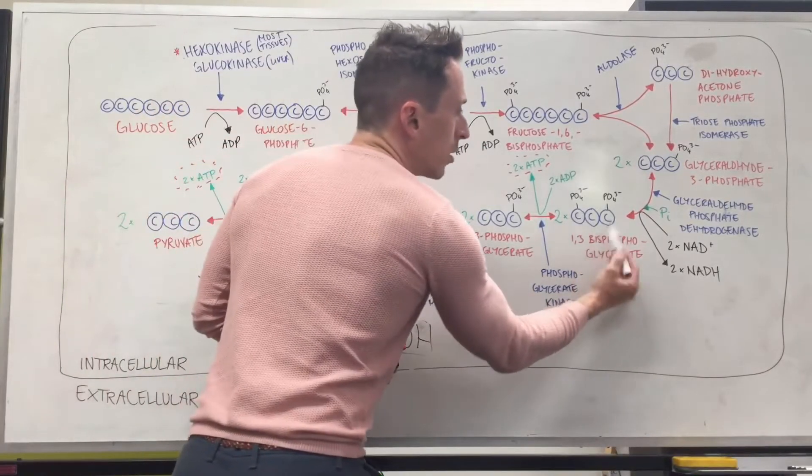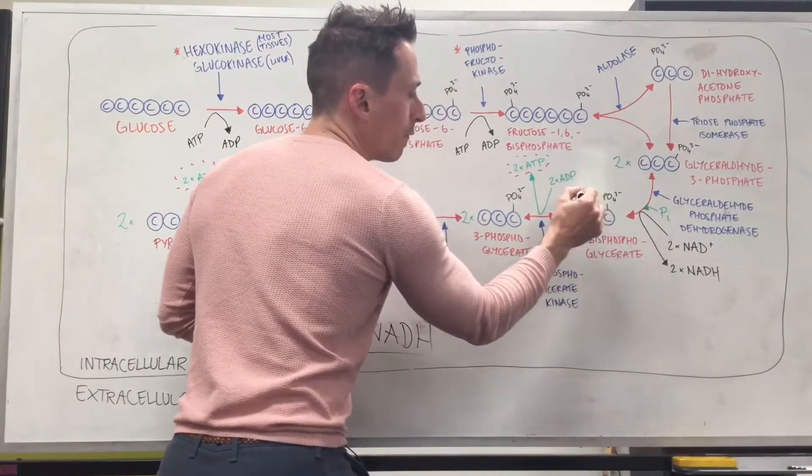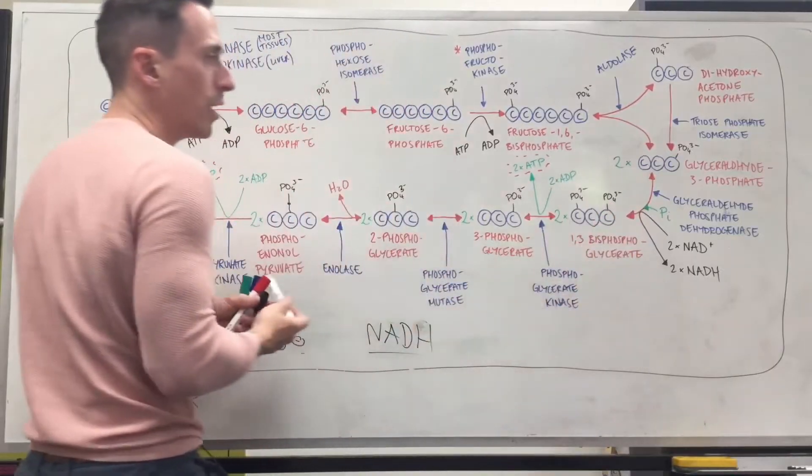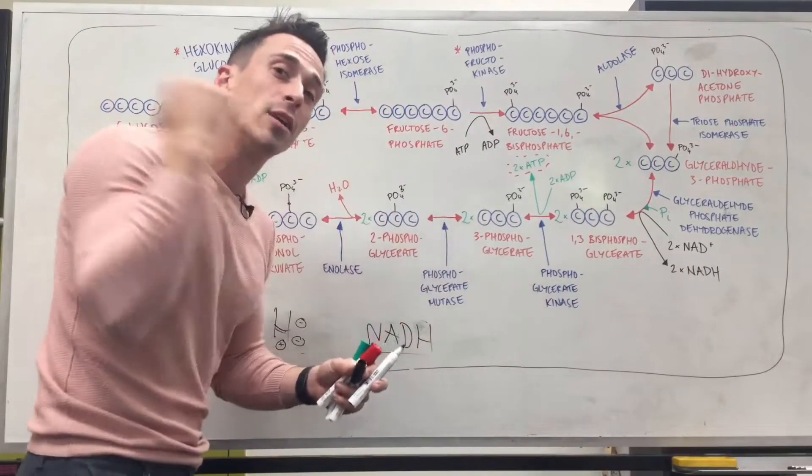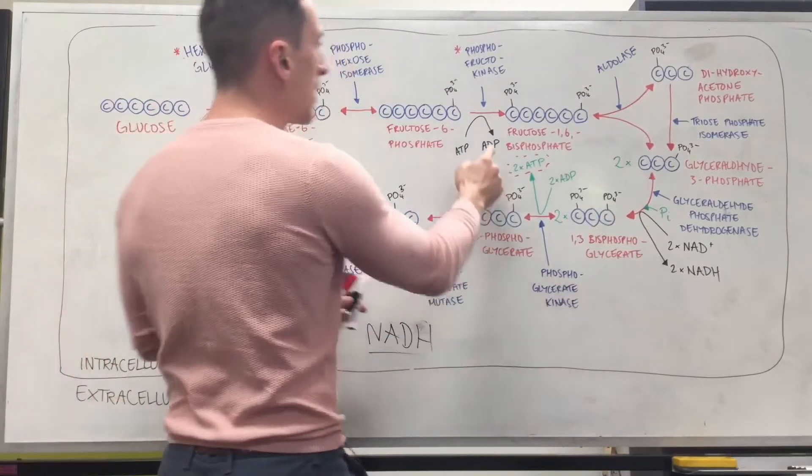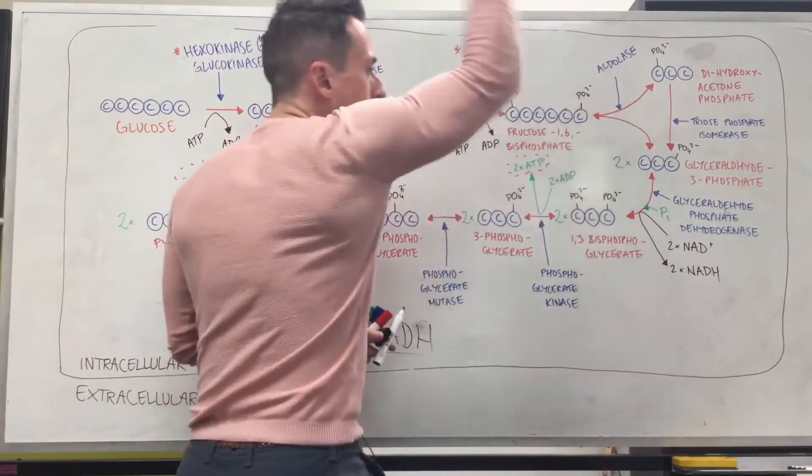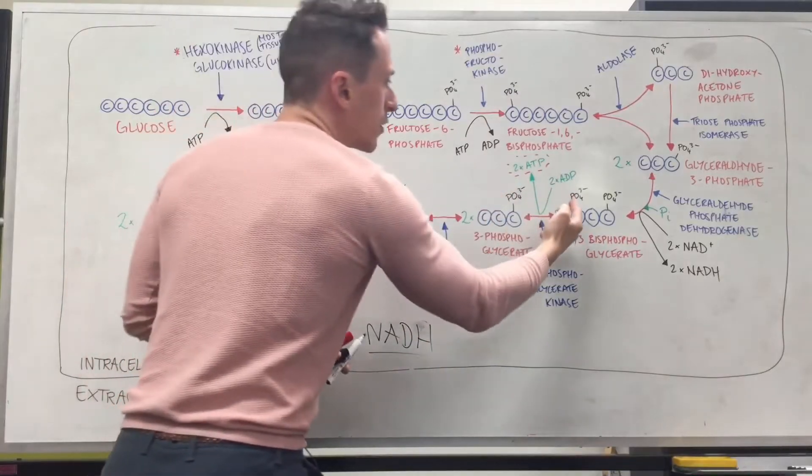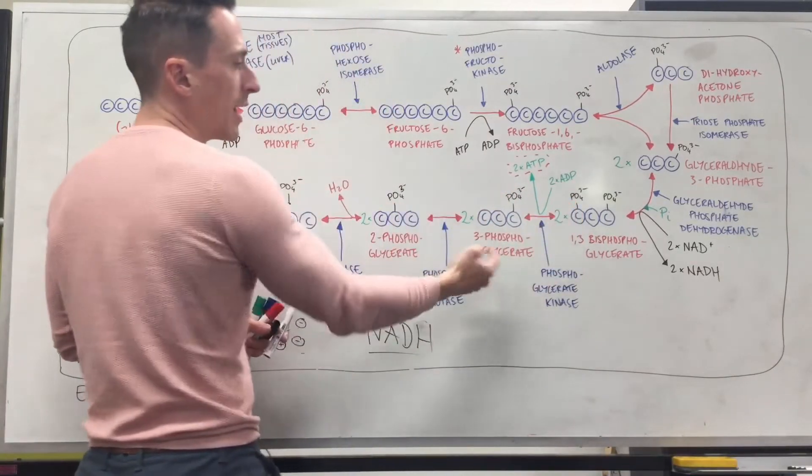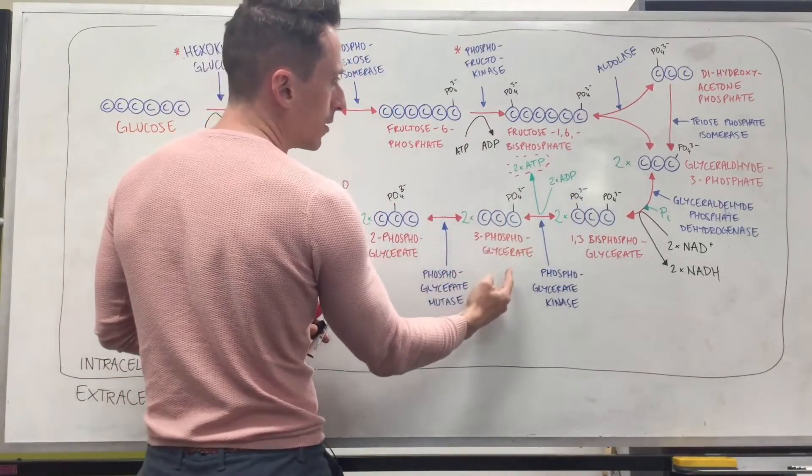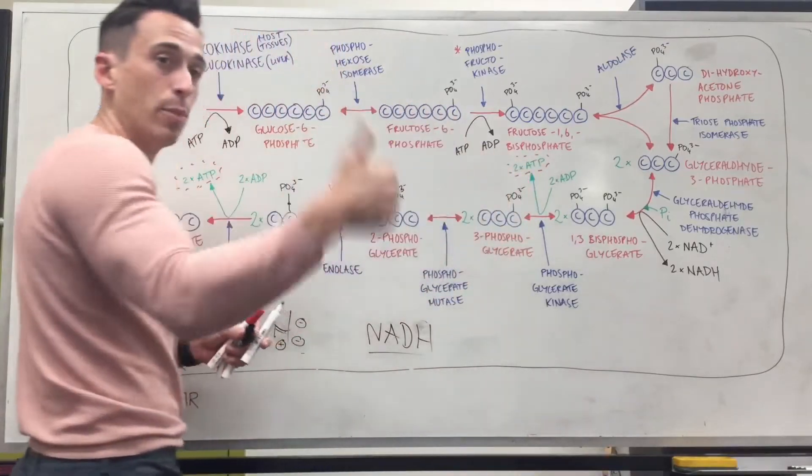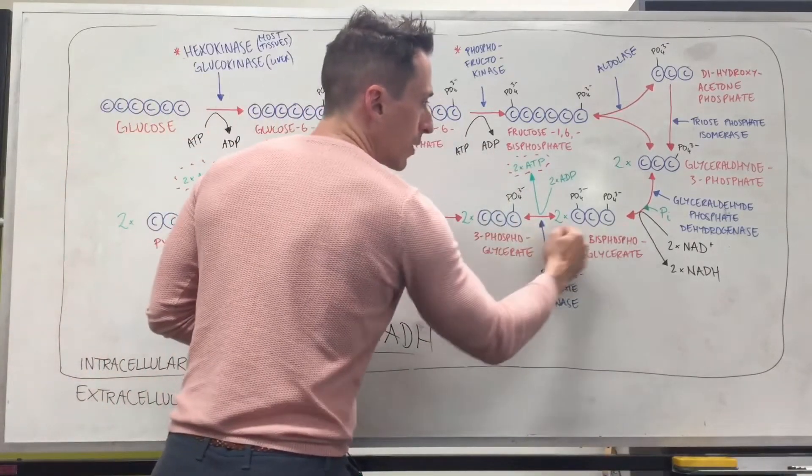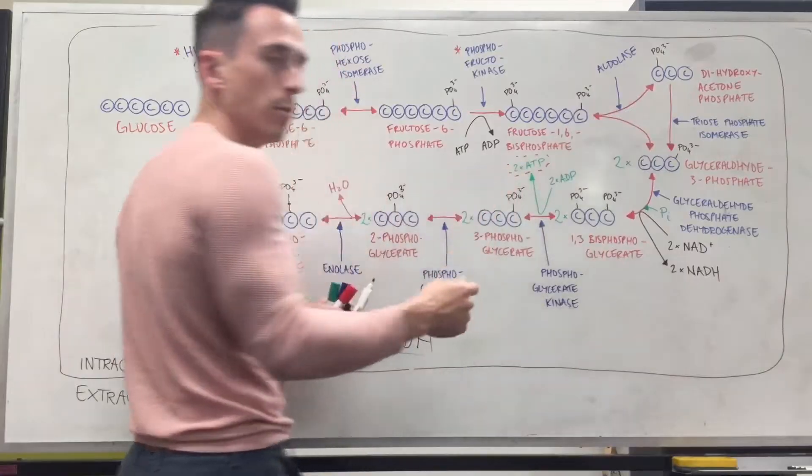Now we've got this three carbon chain with a phosphate on the first and a phosphate on the third. Now what we do is we start to steal the phosphate back. So we take these ADPs that we produced previously, we steal one phosphate away, we turn ADP into ATP. This phosphate we've stolen from the first position, so now we're left with a 3-phosphoglycerate. But we've produced energy ATP. Because there's two of these three carbon molecules, we produce 2-ATP. Great.